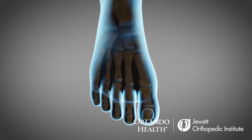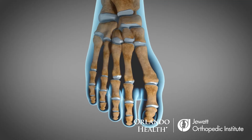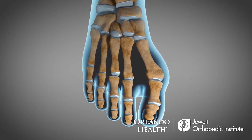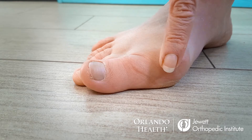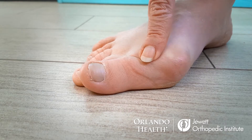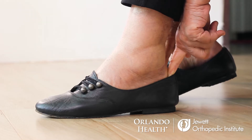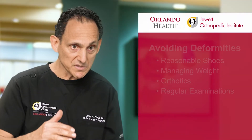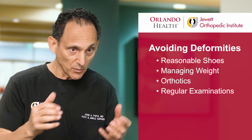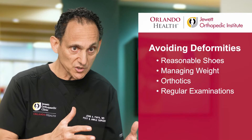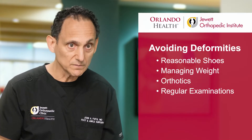The most common cause shown to increase the risk of developing forefoot deformity is wearing ill-fitting shoes. If you have a bunion deformity, a closed shoe is going to potentially rub over your bunion. A lot of problems can be avoided by wearing reasonable shoes and keeping your weight under control.